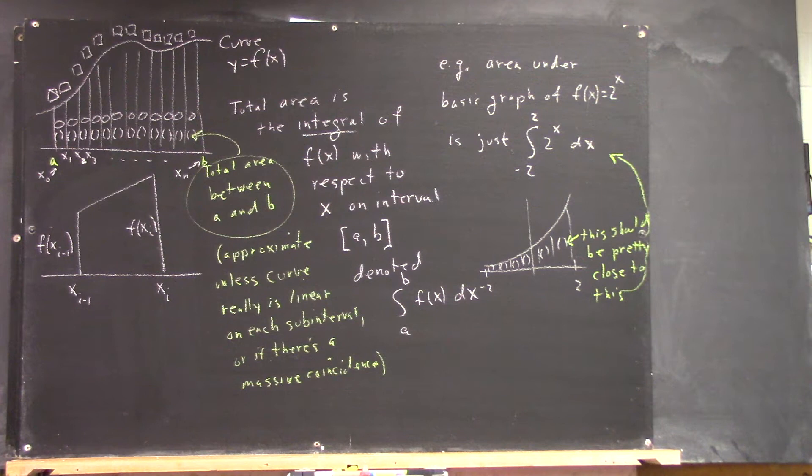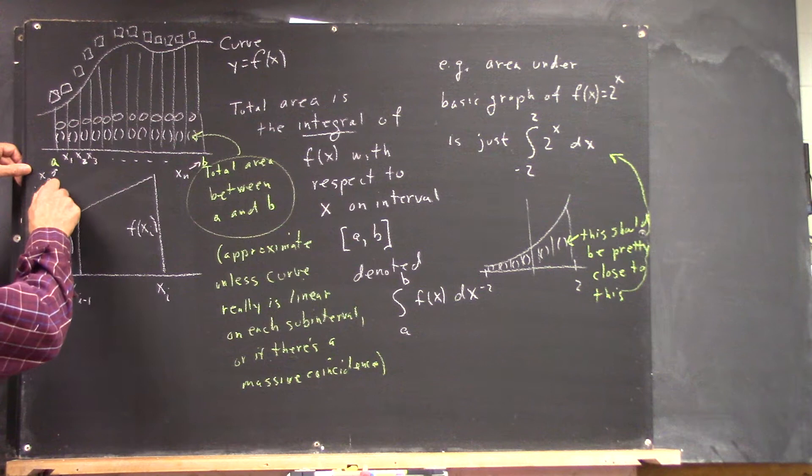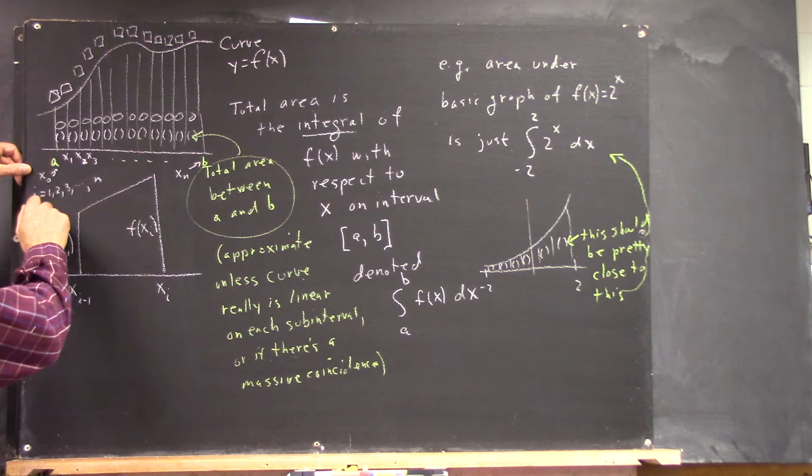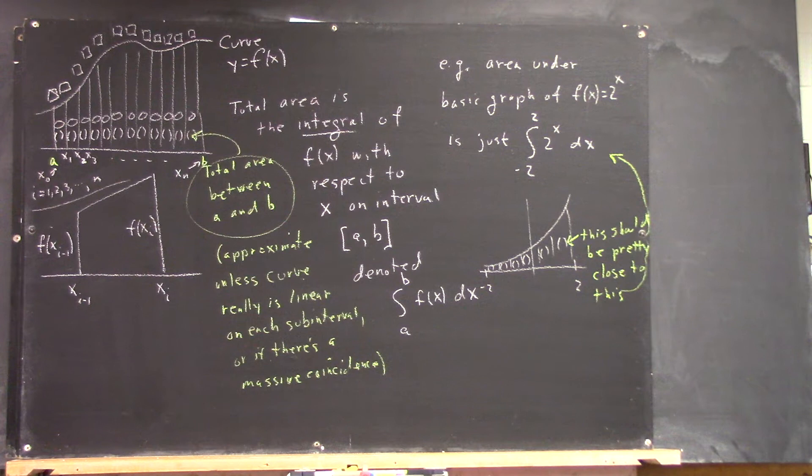If I want to talk about just any old interval, well, I've got to have a notation for just any old interval, right? So I'm going to say i could equal 1, 2, 3, up to n.